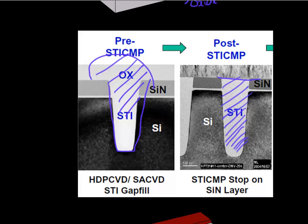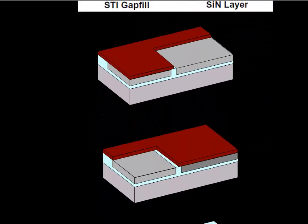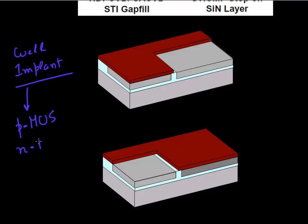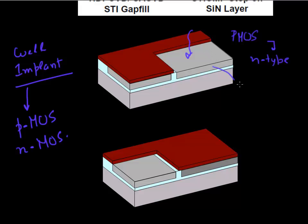Now that we are done with STI, the next step in the process flow is to form the well implants. These well implants essentially define your active region — the regions where the devices would be made. You define where you'll make your P-channel device and where you'll make your N-channel device. You pattern your resist and expose the region where you want to make P-channel devices. These are PMOS devices with an N-type substrate, so you implant this region with arsenic or phosphorus to create the N-well.